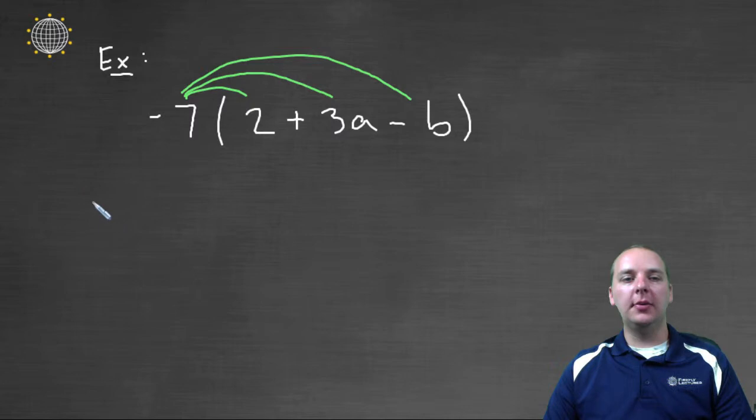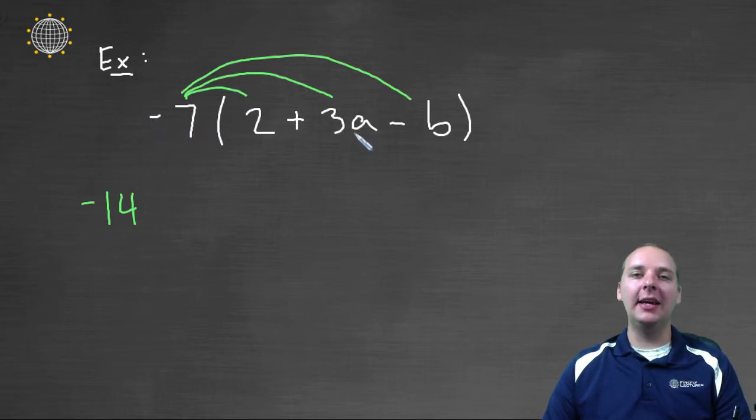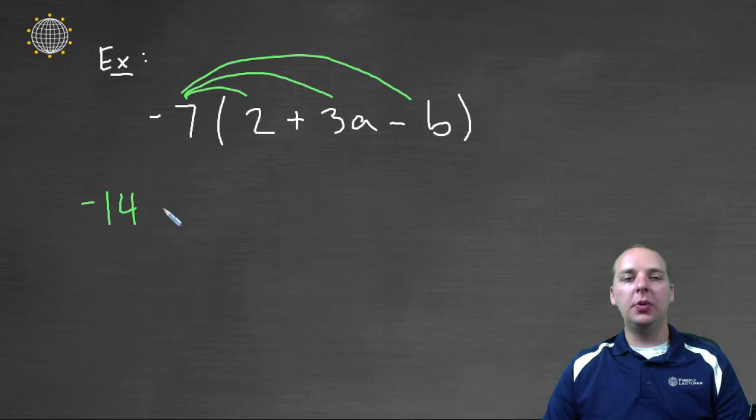So we would get minus fourteen, that's negative seven times two, and then negative seven times three a would give us negative twenty-one a. So we would have minus twenty-one a. And then here's a very common occurrence as well. We have a negative times a negative, we'll actually turn into a plus. So we'll have negative seven times negative b makes positive seven b.